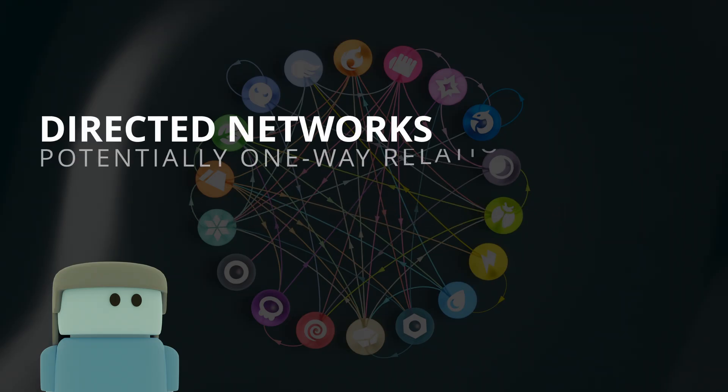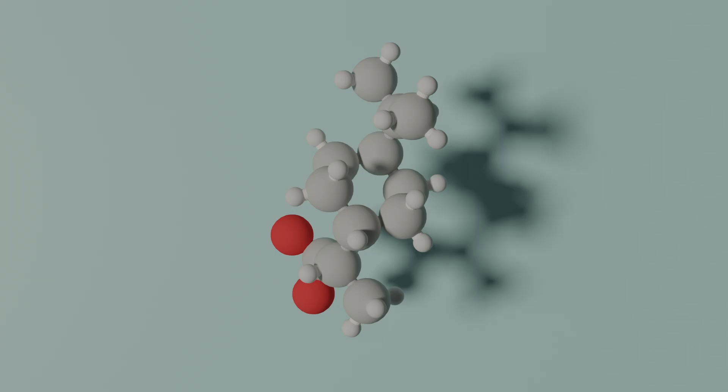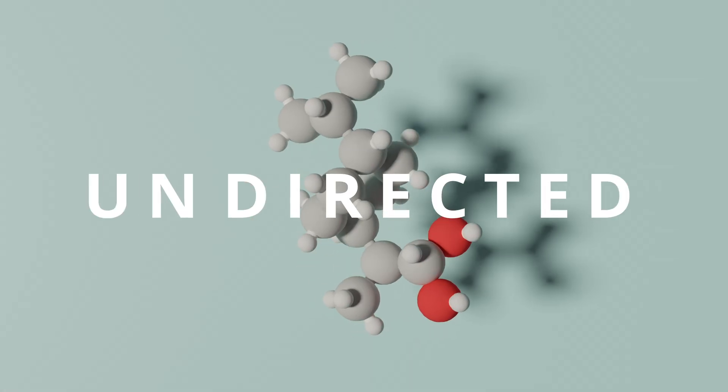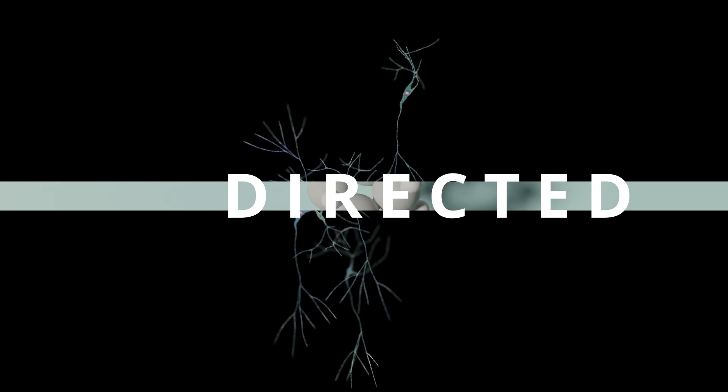Such networks are called directed networks, which stand in contrast to undirected networks representing two-way relationships. For example, while atomic bonds are undirected, voltage spikes of neurons typically travel in a single direction, suggesting a directed network.